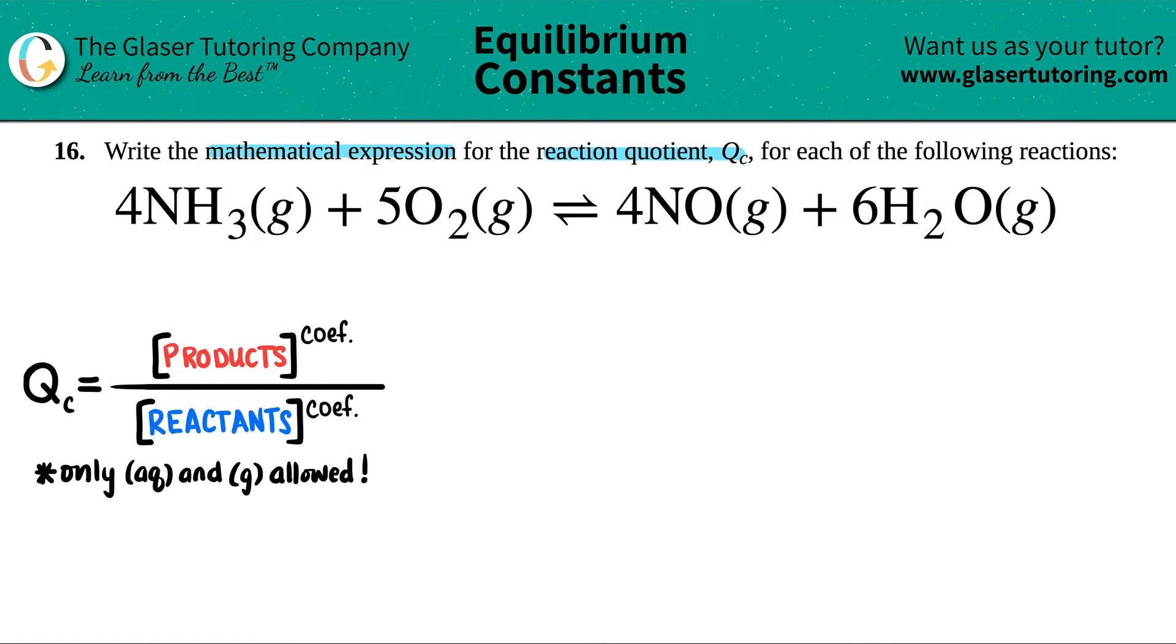And the QC is just basically your products divided by your reactants. And both of these have to be raised to the coefficients. C-O-E-F is coefficients, aka the big numbers in the balanced equation.